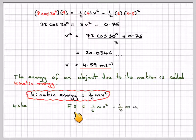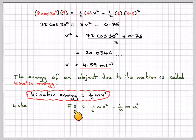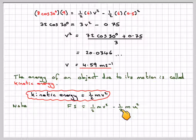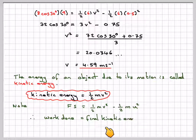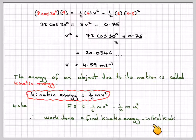Note from before the FS that the work done is equal to 1 half MV squared minus 1 half MU squared, therefore we can say that work done is the final kinetic energy minus the initial kinetic energy.